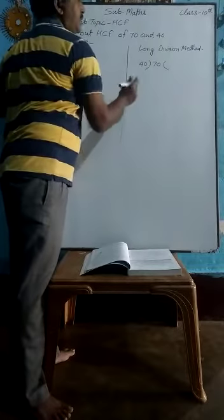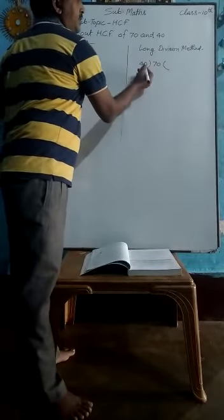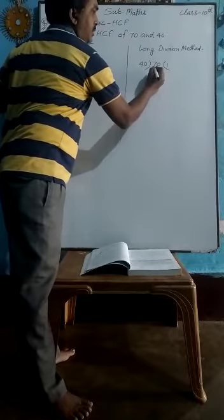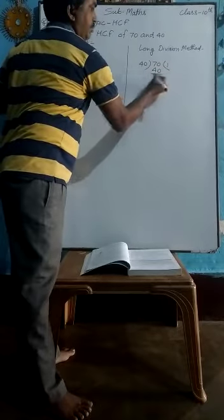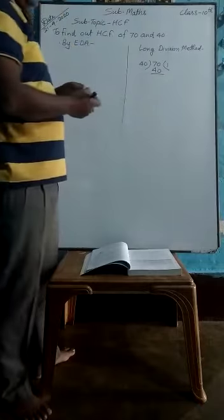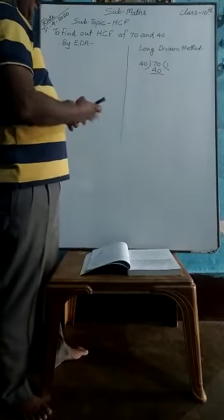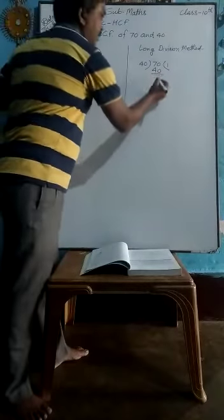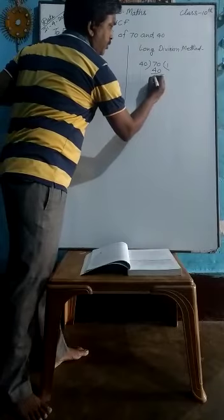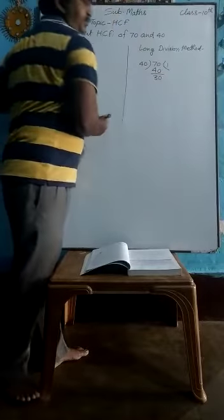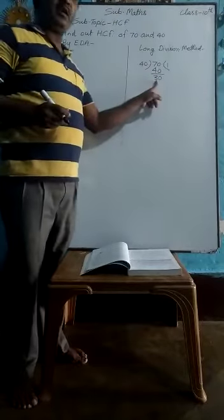Write it down like this and divide. 40 goes into 70 one time. You get quotient 1. Then subtract: 70 minus 40 is 30. The remainder is now 30.